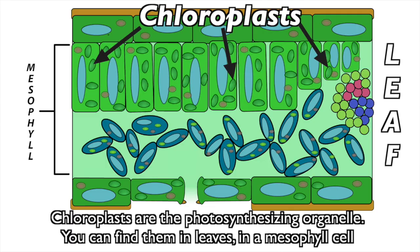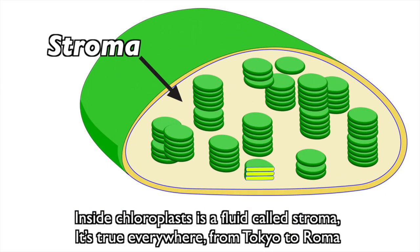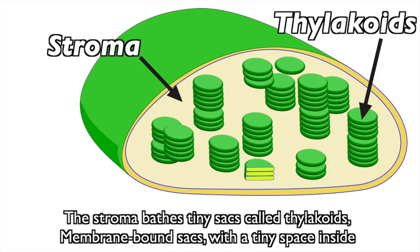Chloroplasts are the photosynthesizing organelle. You can find them in leaves in a mesophyll cell. Inside chloroplasts is a fluid called stroma — it's true everywhere from Tokyo to Roma.